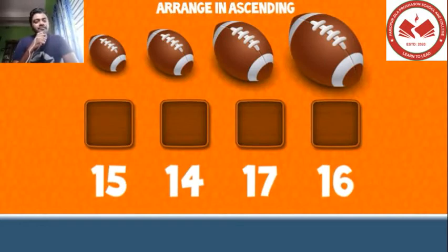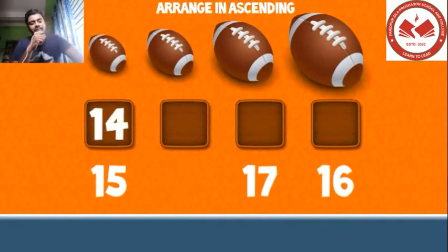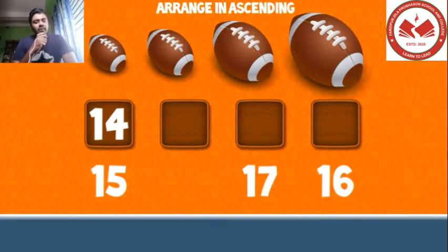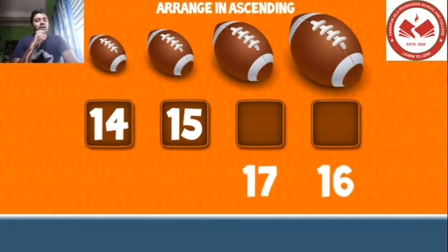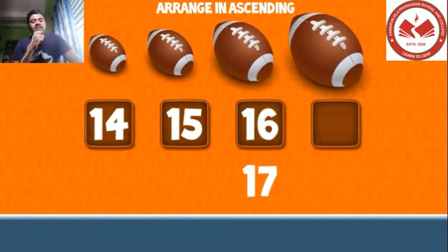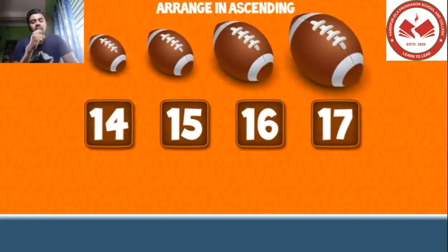Now let's see another one. In this series we have to arrange numbers from smaller to greater, so we can put 14 in the first box. We have to put 15 here, then 16, and now the largest number is 17. So to complete the series we must put 17 at the last position. Our series is complete — this is called arrangement of numbers from smaller to greater.